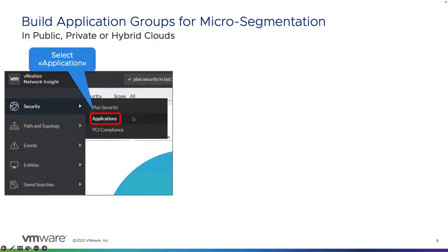When we choose applications, it takes us to the application dashboard where we can view the applications defined within our infrastructure. There are many ways to discover applications, which will be covered in part two of this series.